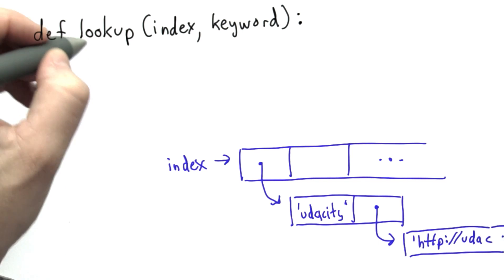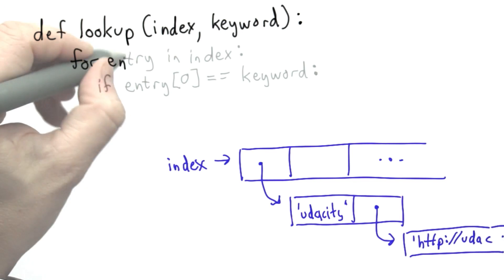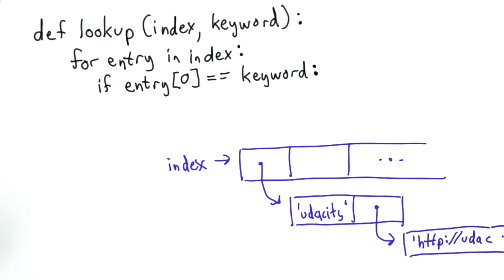So let's write that again. That's going to be a for loop, and it's going to be exactly the same code as we had before. So we're going to loop through the elements in the index. Each time we go through the loop, the variable entry will refer to one of those elements. We're going to check if the value in position 0, which is the keyword of that entry, matches the keyword we're looking for.